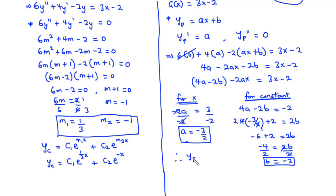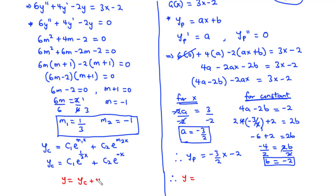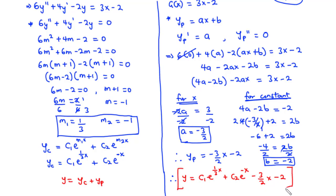Therefore yp = ax + b = −(3/2)x − 2. The general solution of the differential equation is y = yc + yp = c₁e^(x/3) + c₂e^(−x) − (3/2)x − 2. This is the general solution to the given differential equation.